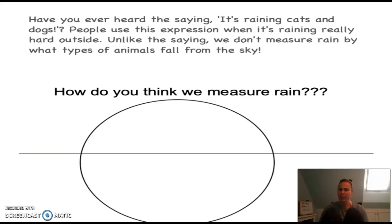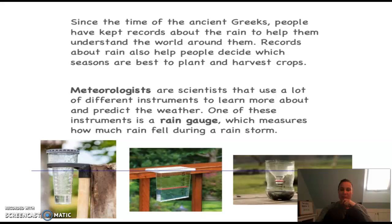How do you think we measure rain? I want you to pause the video now and open up your own version of this Google slide presentation. In the circle, write down a couple ideas about how we could measure rain. If we had a really big rainfall and we want to know exactly how much water fell from the sky, what might we do? Once you've added your thoughts, unpause the video and come right back.